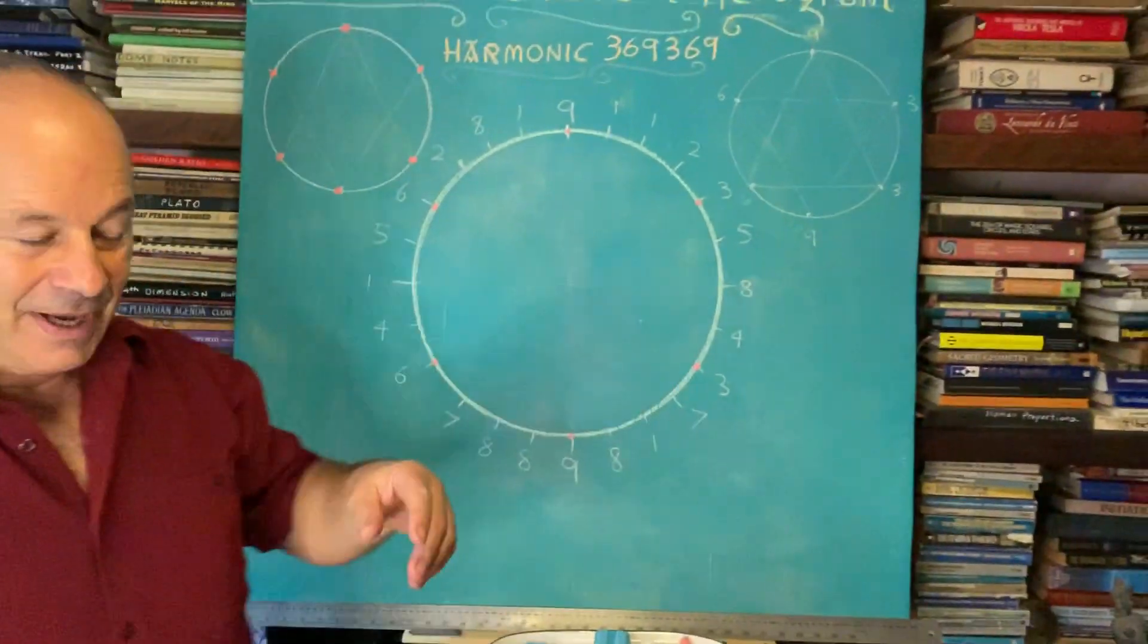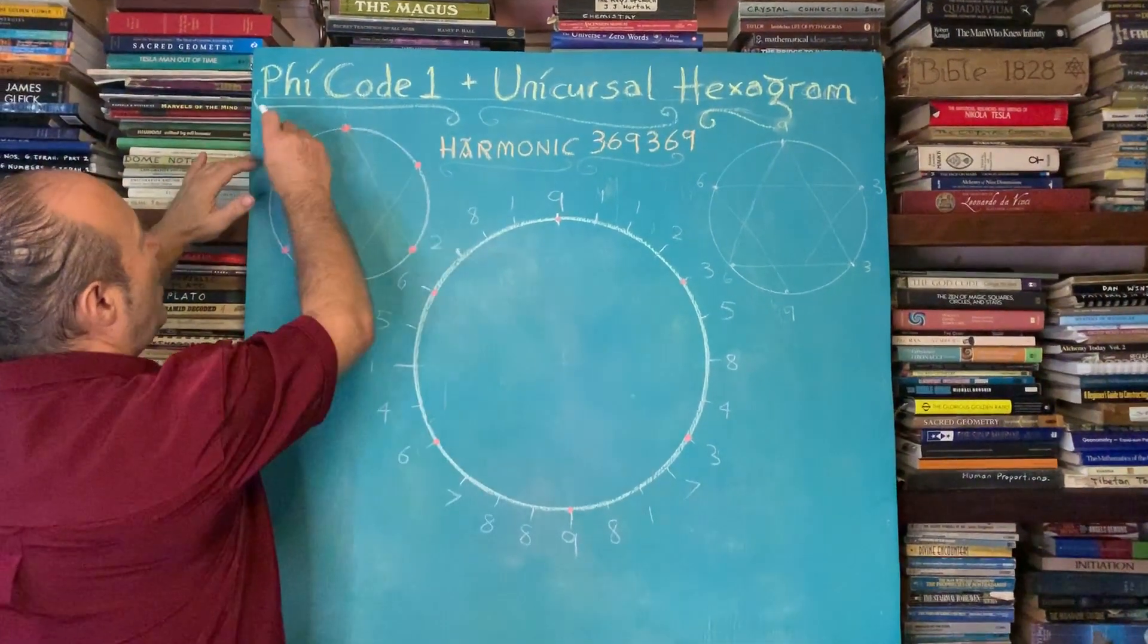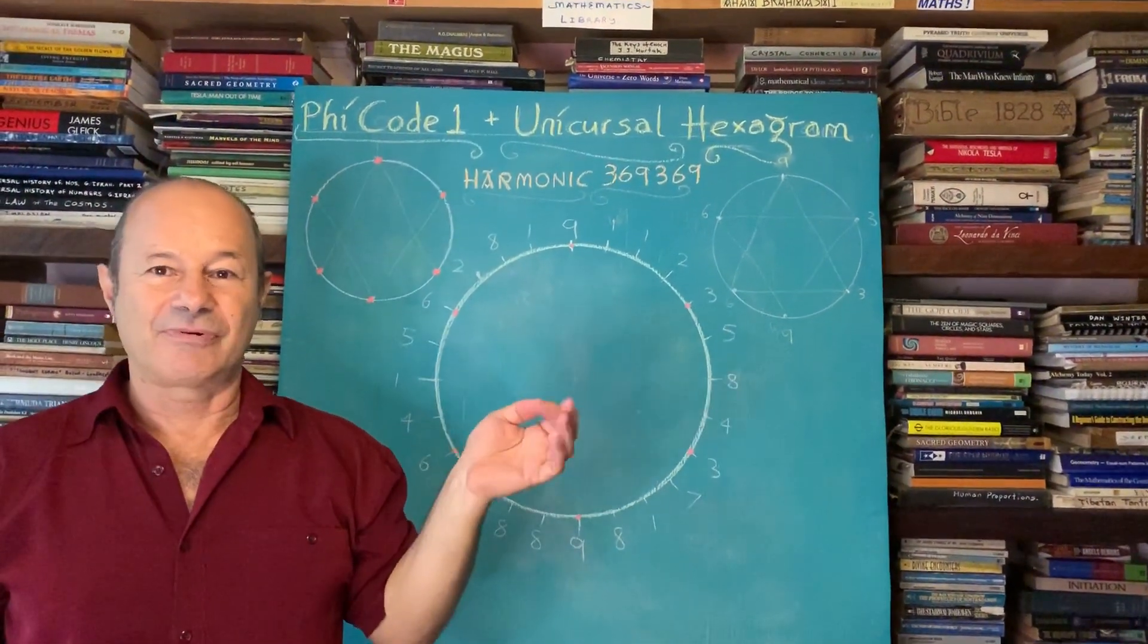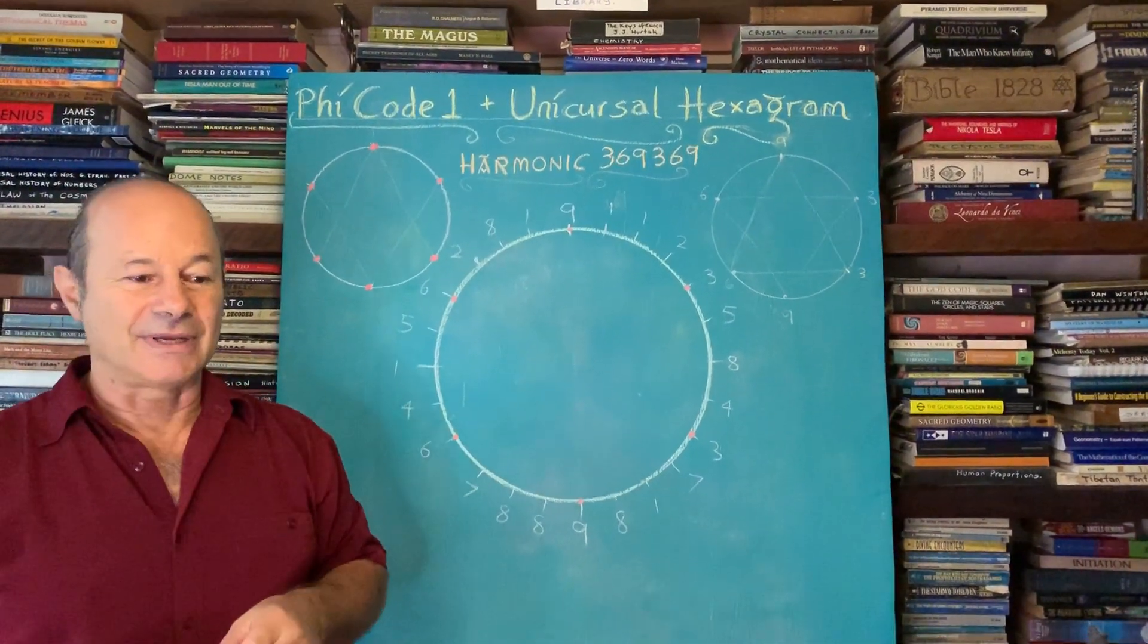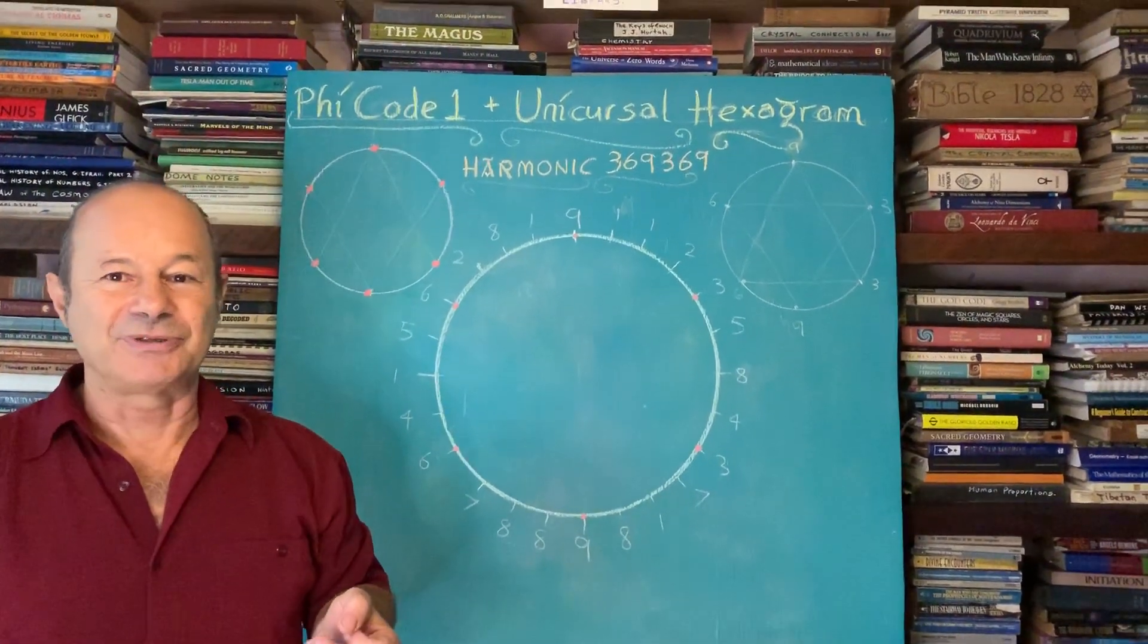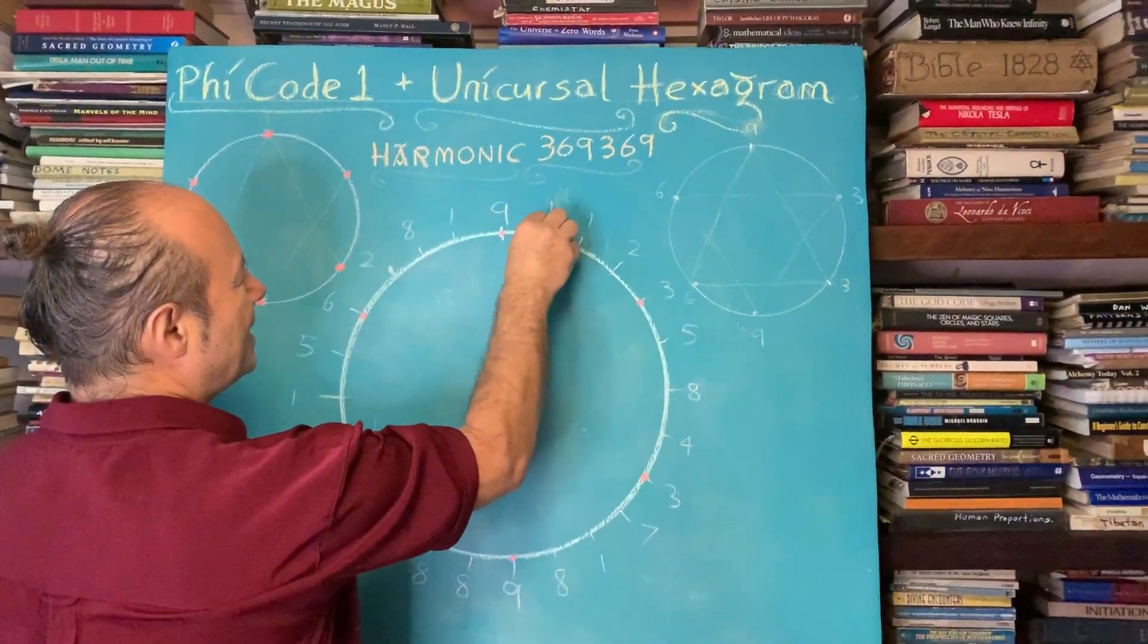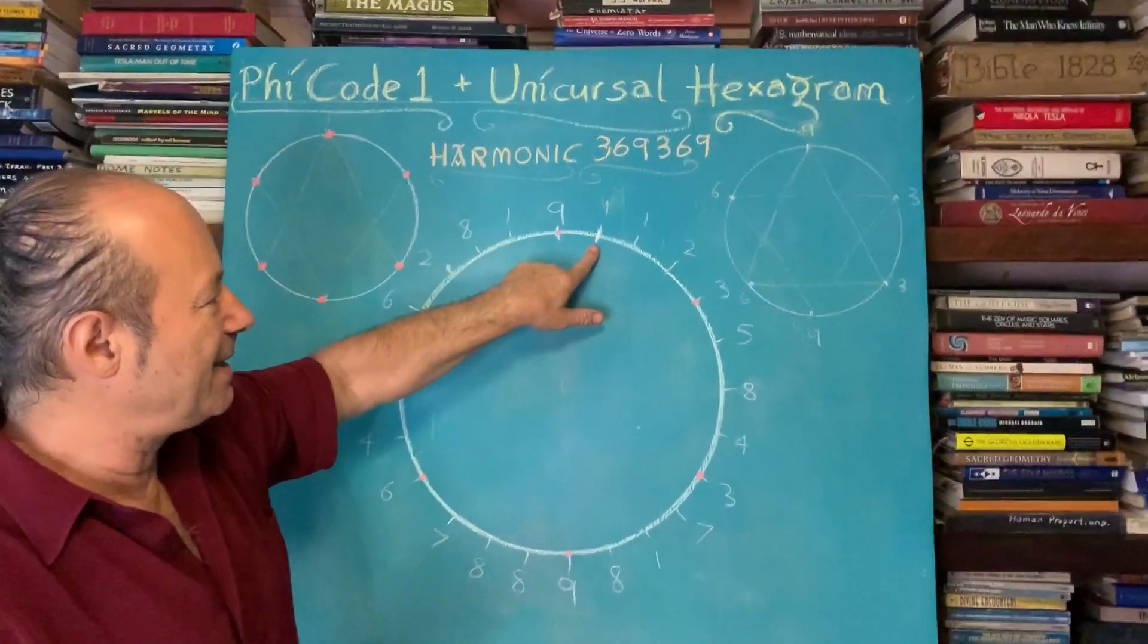Before we get to the hexagram, I want to show you what I mean by Phi Code 1. Phi Code 1 is really the digital compression of what I call the fabulous Fibonacci sequence. I spent my whole last 30, 40 years completely enraptured by the mathematical divinity of the Fibonacci sequence.